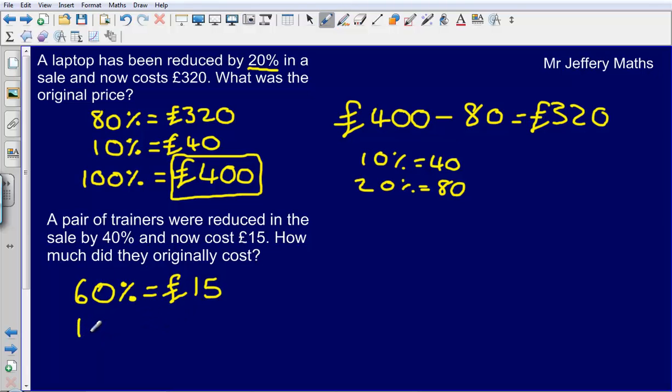Now again I am going to work out what 10% is. So I am going to work out what 10% is. So take £15 and divide that by 6. 15 divided by 6 gives me an answer of £2.50. And then that means that if 10% is £2.50 that 100% must be £25.